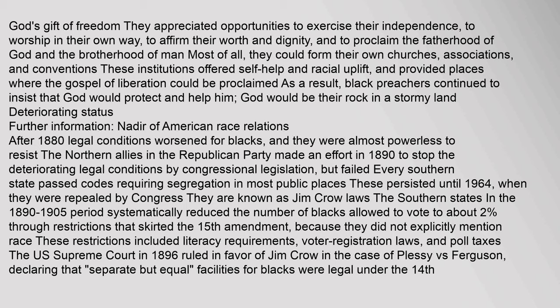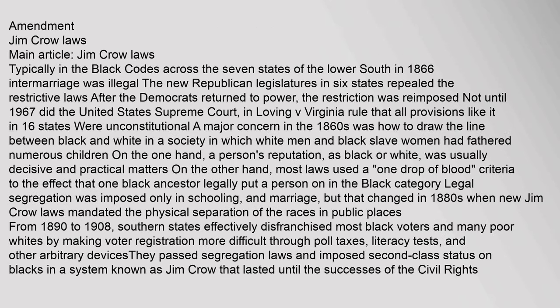After 1880, legal conditions worsened for blacks and they were almost powerless to resist. The northern allies in the Republican Party made an effort in 1890 to stop the deteriorating legal conditions by congressional legislation, but failed. Every Southern state passed codes requiring segregation in most public places; these persisted until 1964 when they were repealed by Congress and are known as Jim Crow laws. The Southern states in the 1890–1905 period systematically reduced the number of blacks allowed to vote to about 2% through restrictions that skirted the 15th Amendment. The U.S. Supreme Court in 1896 ruled in favor of Jim Crow in Plessy v. Ferguson, declaring that 'separate but equal' facilities for blacks were legal under the 14th Amendment.